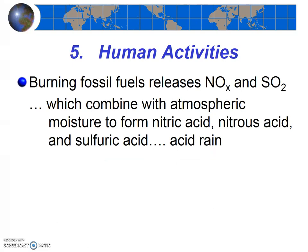Humans can also directly affect how fast rocks weather. One of the most important ways humans impact weathering is by releasing carbon, sulfur, and nitrogen oxides into the atmosphere when burning fossil fuels. These carbon oxides, sulfur oxides, and nitrogen oxides combine with water already present in the atmosphere to form several weak acids, including carbonic acid, sulfuric acid, nitric acid, and nitrous acid. The addition of acids to the atmosphere results in slightly more acidic rainfall, fog, and snow. This increased acidity in precipitation increases the acidity of lakes, streams, and the ocean, resulting in increased dissolution of rocks, especially limestone and marble.